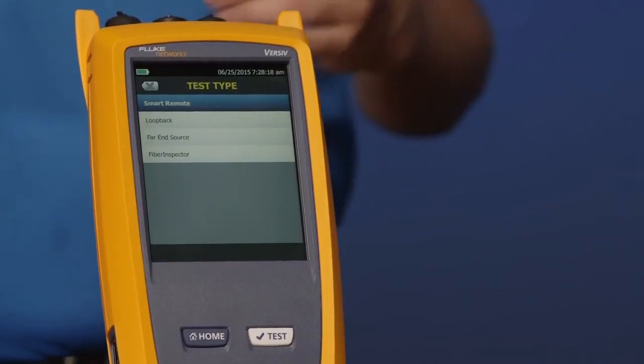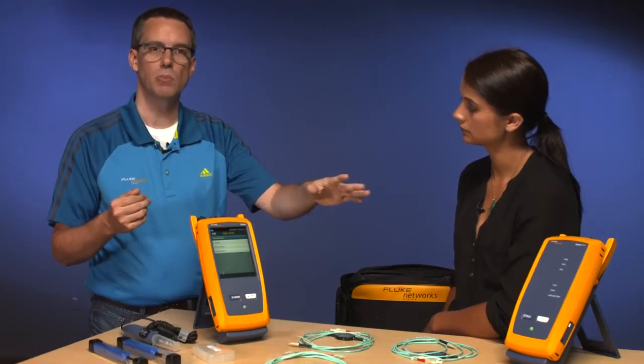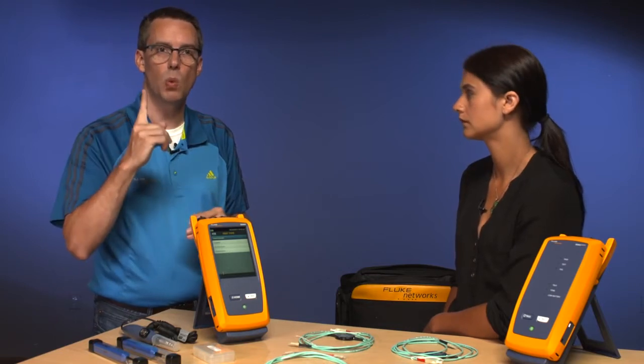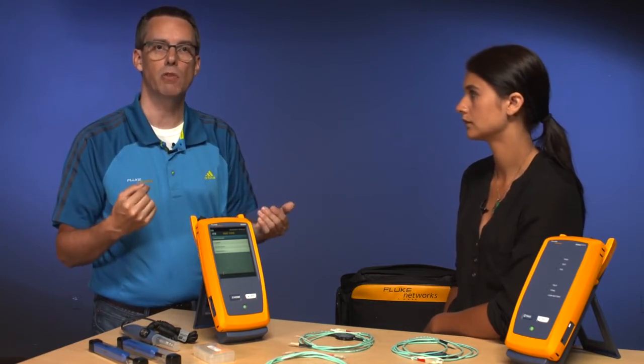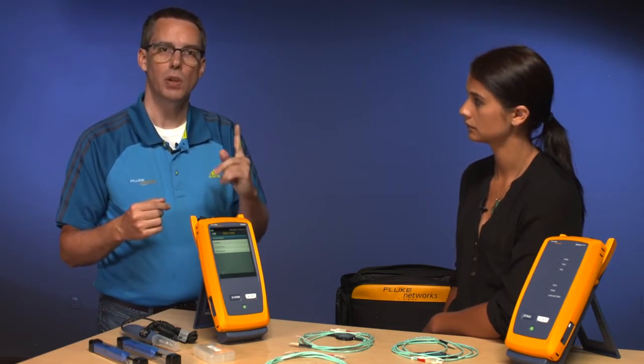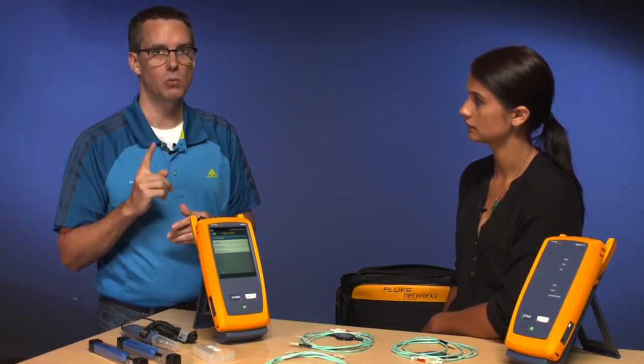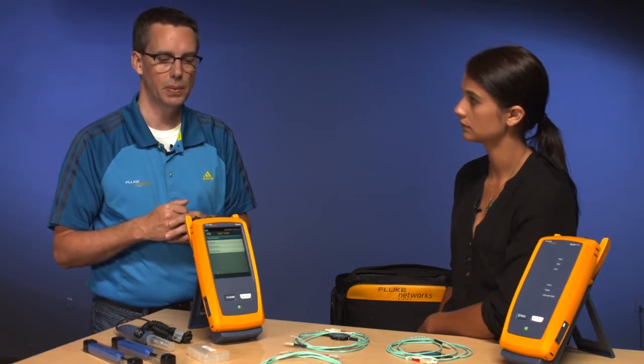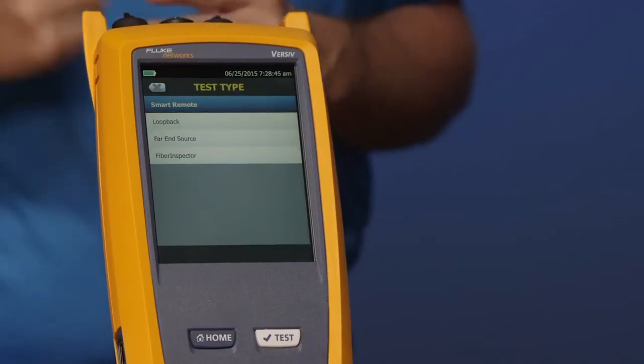There is also Far End Source, where we can just turn that into a simple source. So if we wanted to measure just one fiber, we can now measure one fiber. And unlike the previous DTX, we can measure both wavelengths on one fiber at the same time. That's really important when you're doing single mode. And then finally, there's Fiber Inspector.